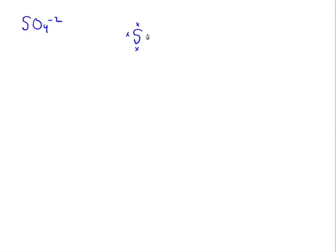A common question is how to determine the Lewis dot structure of polyatomic anions. For example, we have the sulfate ion with a negative two charge. The valence dot structure for sulfur has six valence electrons, and oxygen also has six valence electrons. I'll note the valence electrons of oxygen as O and sulfur as X. I'll place the sulfur in the center and surround it with the oxygen atoms.